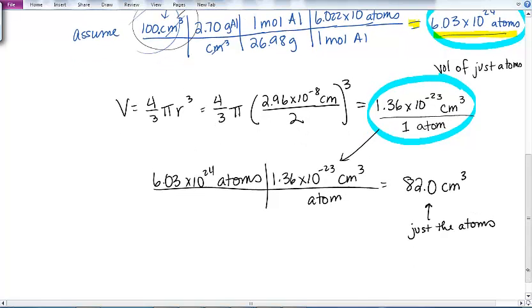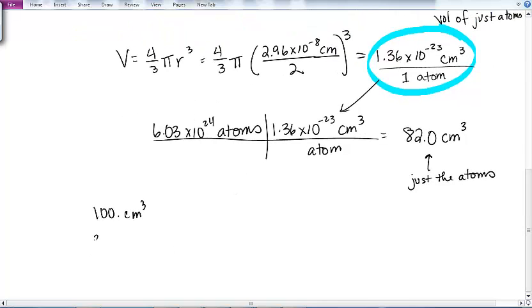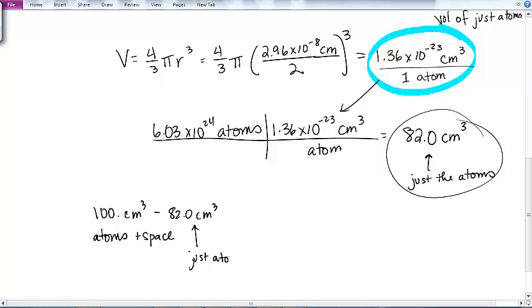Now that is just the atoms. Okay. Back to where we started. I made this assumption way up here that my volume of my block was 100 cubic centimeters. That was atoms and space. I know that the volume of just the atoms is 82 cubic centimeters. So that's just the atoms. So if I subtract those two, I get the volume of just the space.